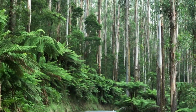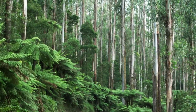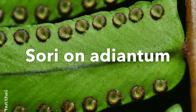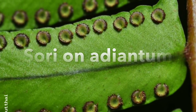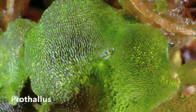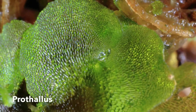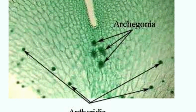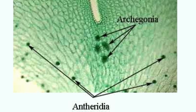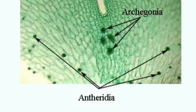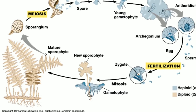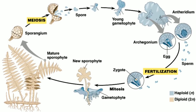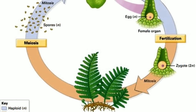In pteridophytes, the gametophyte is a small and independent structure called prothallus. This prothallus contains two distinctive structures called archegonia and antheridia, which produce female and male gametes respectively. Like bryophytes, pteridophytes also have two successive generations, commonly called sporophyte and gametophyte.